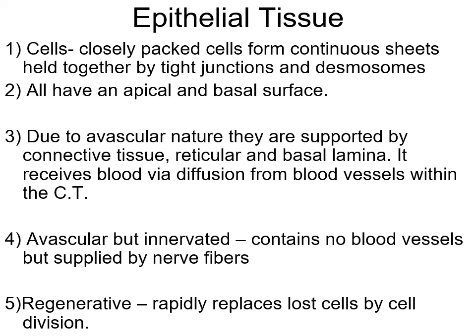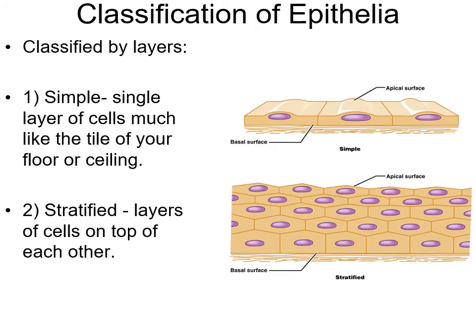Number four: although avascular, epithelial tissue has good nerve supply - it is innervated and contains no blood vessels, but there are nerves that go to the tissue. Fifth, epithelial tissue is regenerative - it has a high mitotic rate, meaning it undergoes cell division and repair very fast. It has to be, because you have simple layers of very fragile epithelial cells like in your GI tract, especially the small intestine. This is associated with leaky gut syndrome.